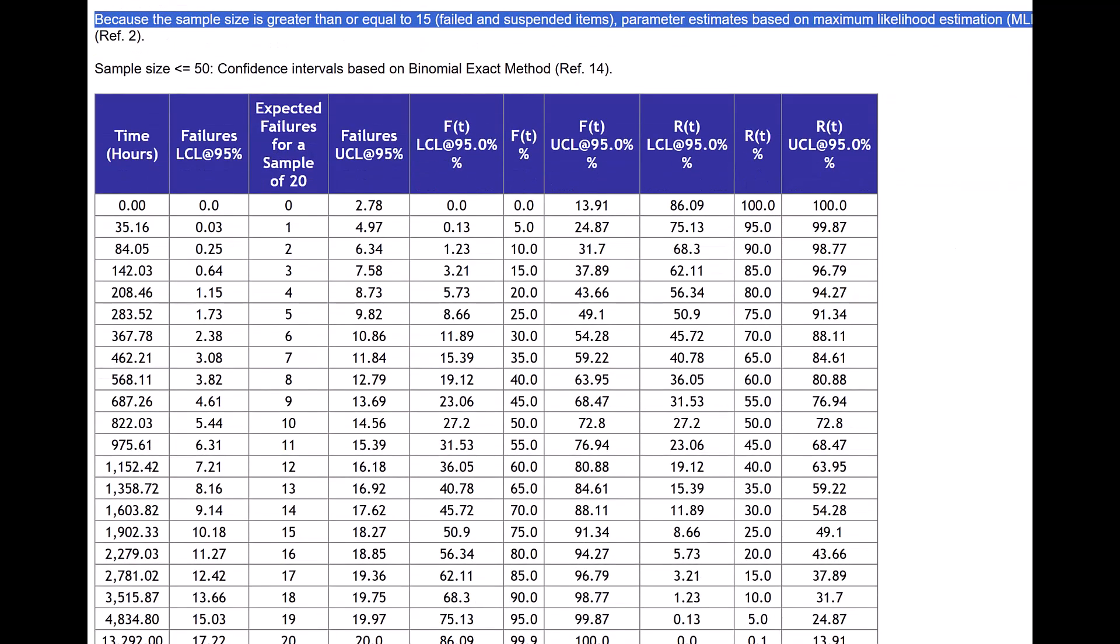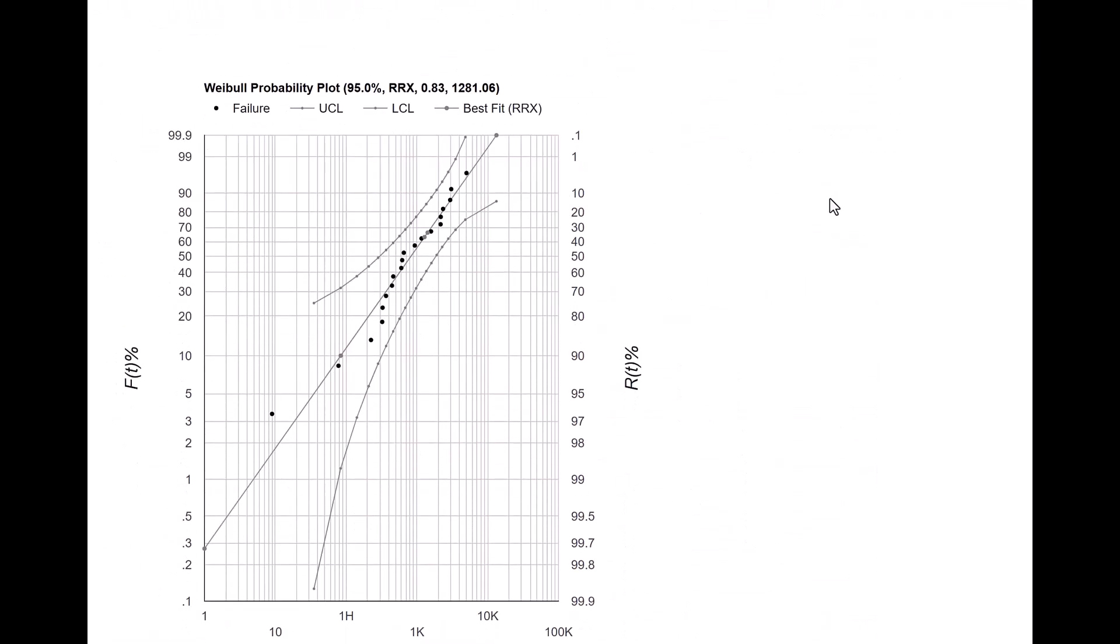As we scroll down we can see the table of calculations made by the software and below that we will see the Weibull probability plot. The software also shows the upper confidence limit and lower confidence limit and it also shows two gray points, two or three gray points. The first one shows the F10 life which is about 84, which corresponds to reliability of 0.9.